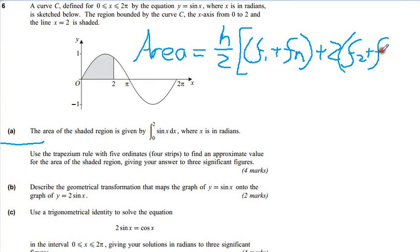f of 3 plus f of n minus 1. If f of n is our last term, then f of n minus 1 is the one before that. So if 1 is the first, then these are all the ones in the middle.